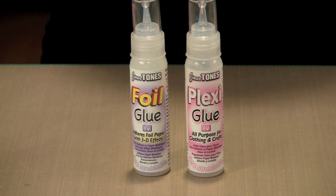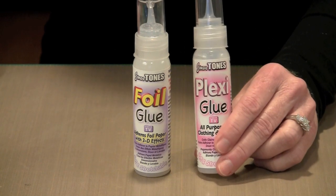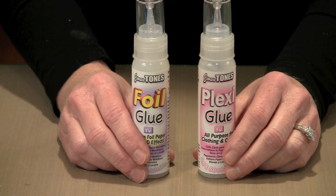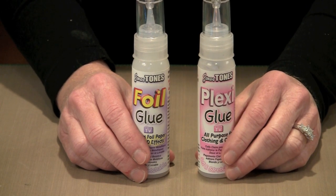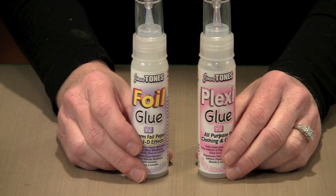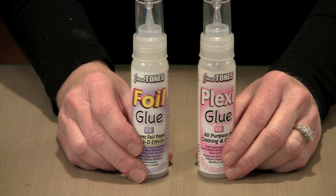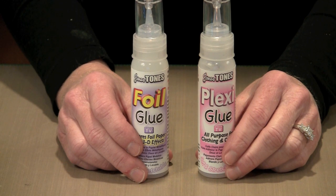There are two versions of Jones Tones glue: the plexiglue and the foil glue. The difference is that the plexiglue tends to be a little bit tackier, and the foil glue can be used for three-dimensional work. You can mound it up and it will hold that shape as the glue dries.